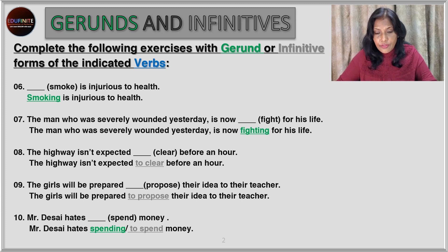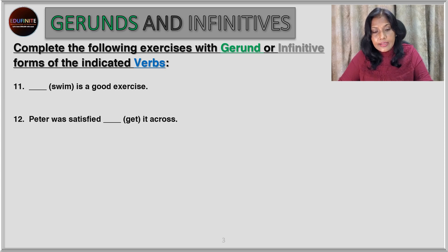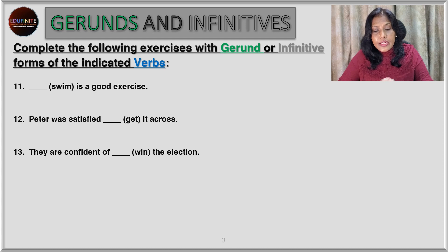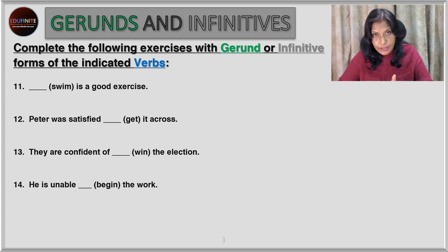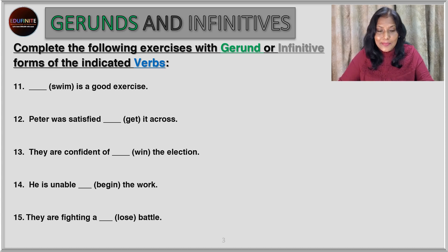Now the third set of five sentences. Blank — the verb is 'swim' — is a good exercise. Peter was satisfied, blank — the verb is 'get' — it across. They are confident of blank — verb is 'win' — the election. He is unable, blank — the verb is 'begin' — the work. They are fighting a blank — the verb is 'lose' — battle. Pause the video, write your answers and then check with mine.